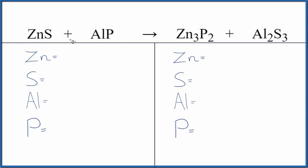So let's look at the type of reaction. We can see that the zinc and the aluminum are switching places. The zinc, instead of the sulfur, is with the phosphorus. We have zinc phosphide here. The aluminum, instead of the phosphorus, is with the sulfur, aluminum sulfide. So double displacement reaction, also called a double replacement reaction.